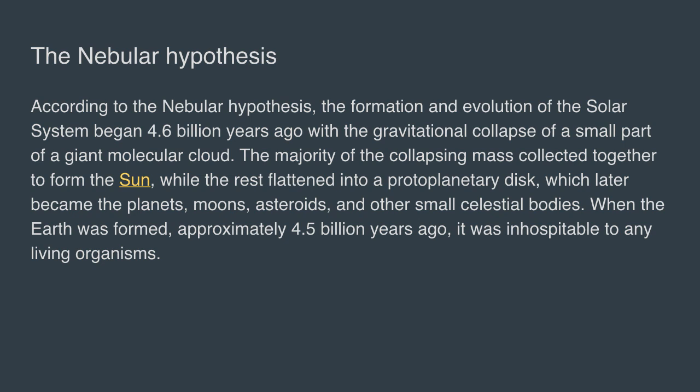The Nebular Hypothesis. According to the Nebular Hypothesis, the formation and evolution of the solar system began 4.6 billion years ago with a gravitational collapse of a small part of a giant molecular cloud. The majority of the collapsing mass collected together to form the sun, while the rest flattened into a protoplanetary disk, which later became the planets, moons, asteroids, and other small celestial bodies. When the Earth was formed approximately 4.5 billion years ago, it was inhospitable to any living organisms.